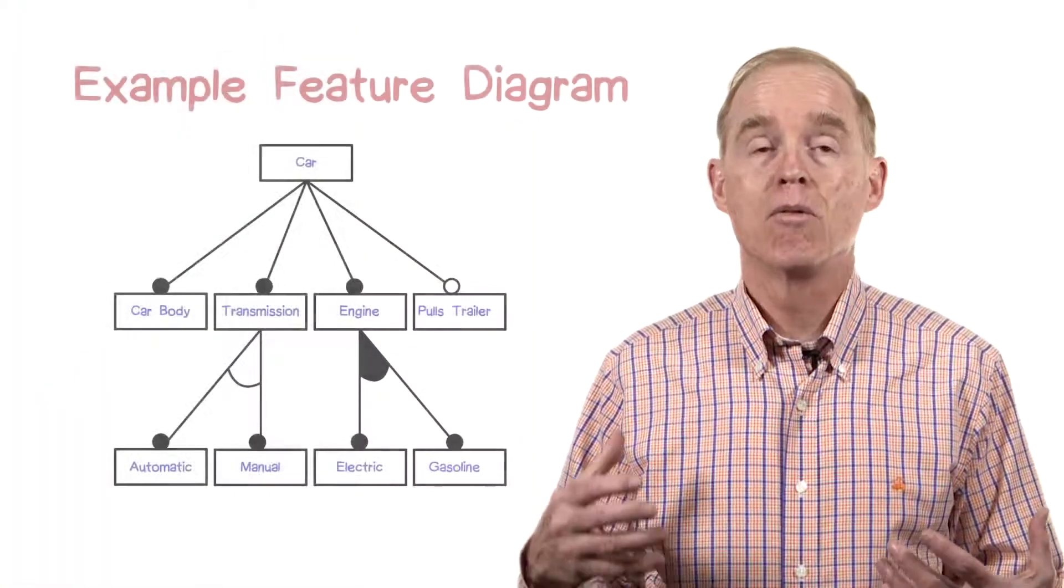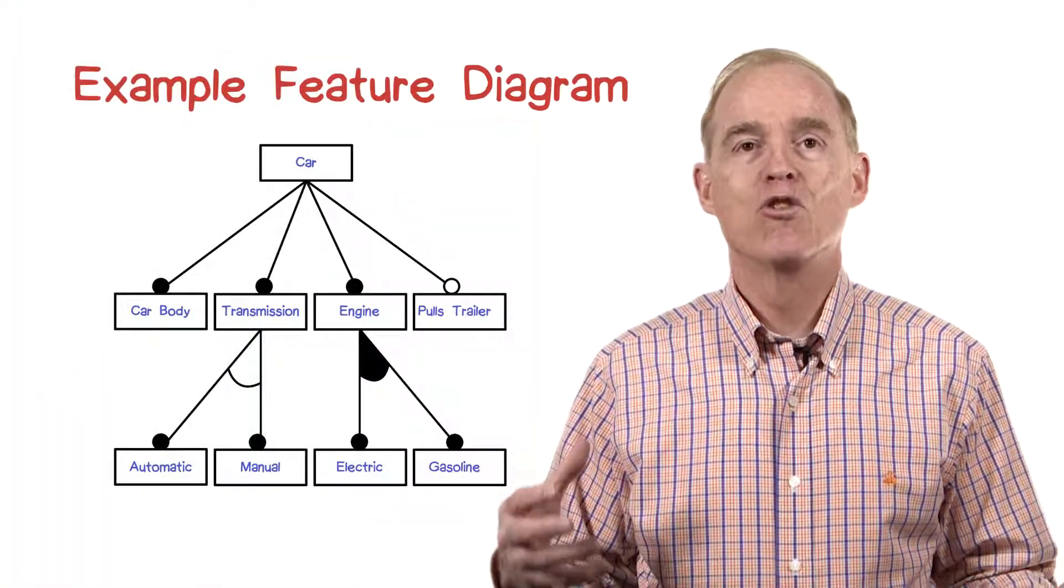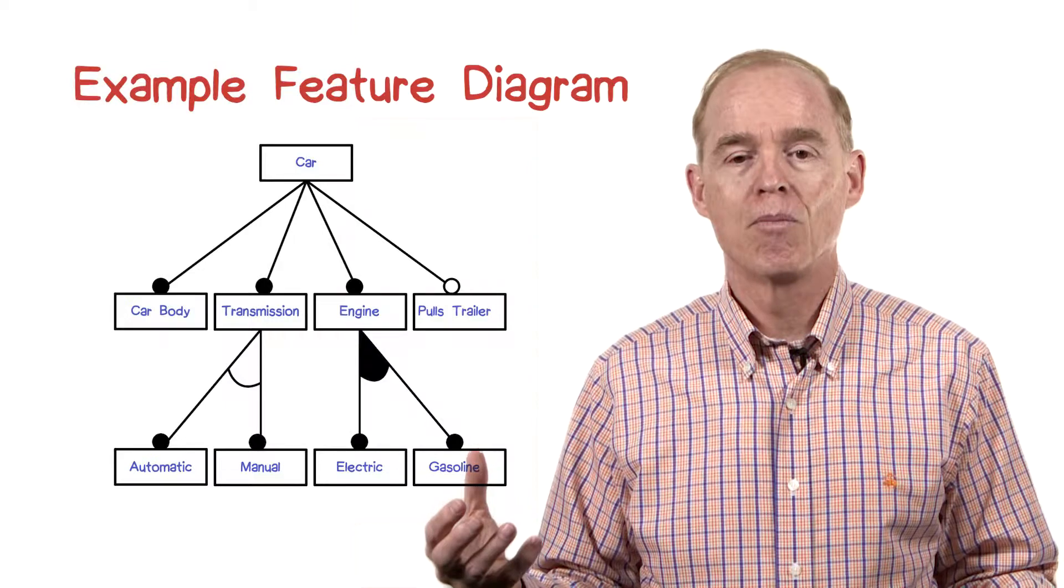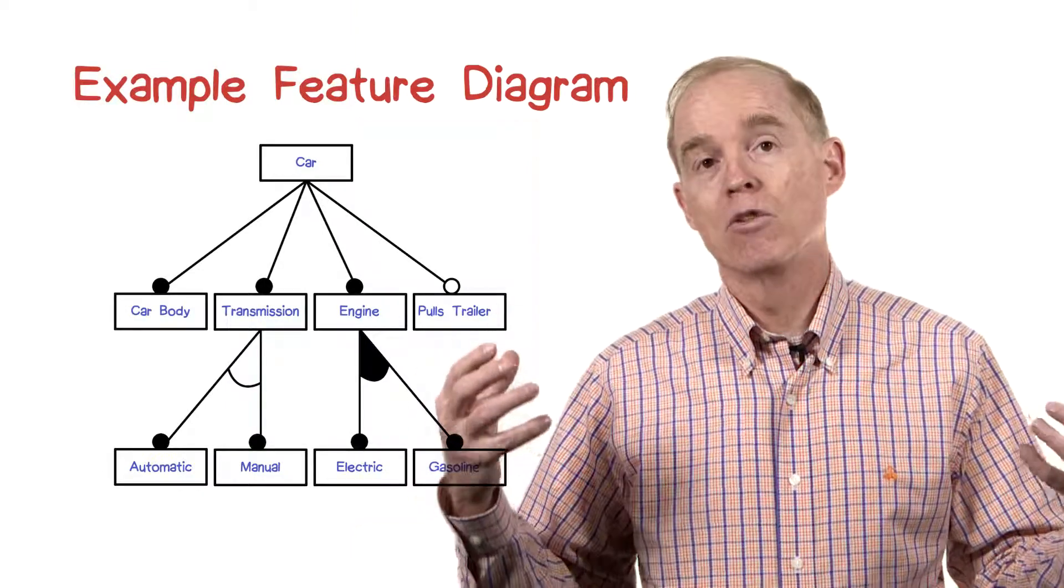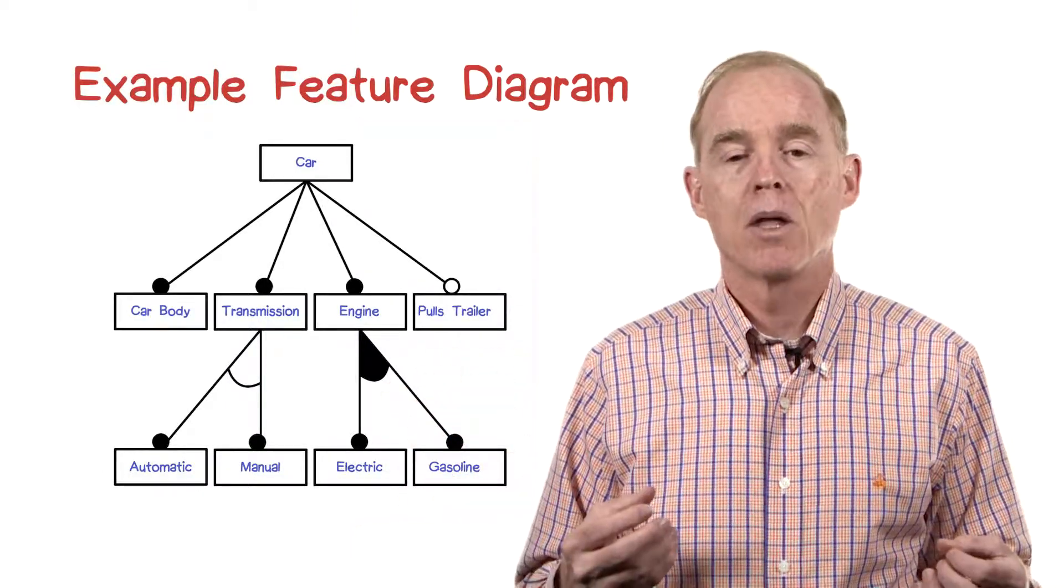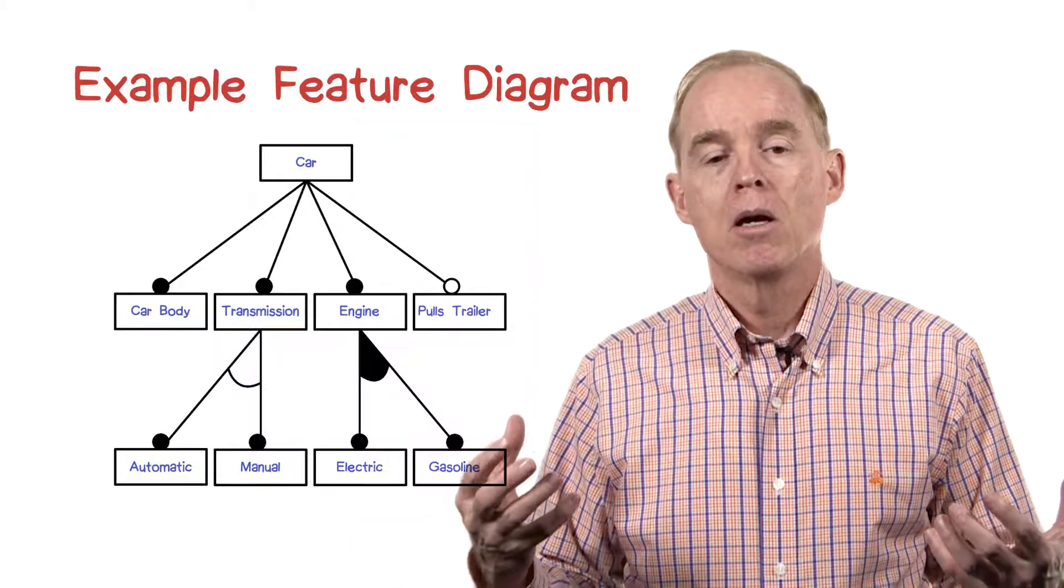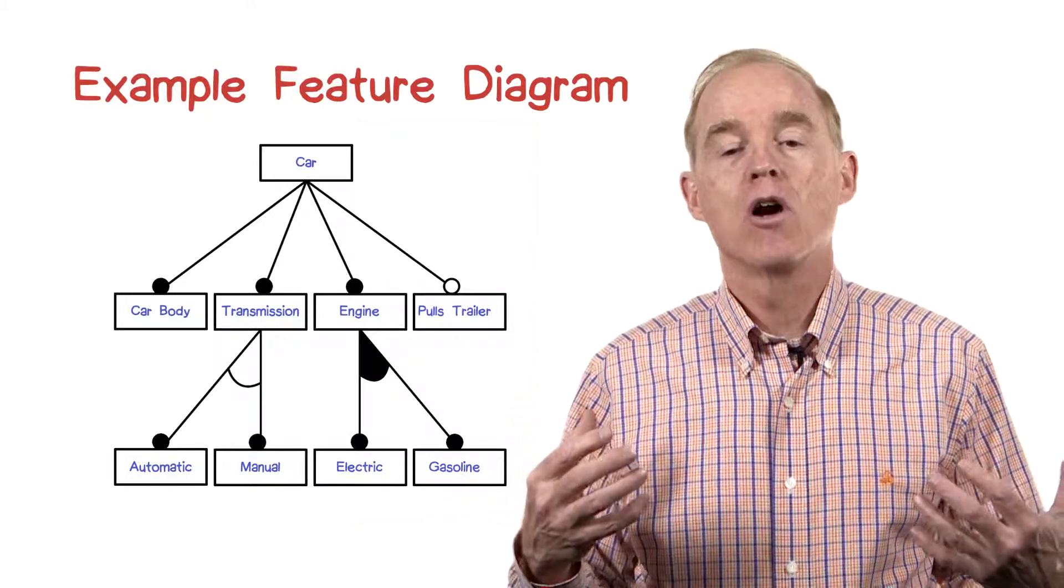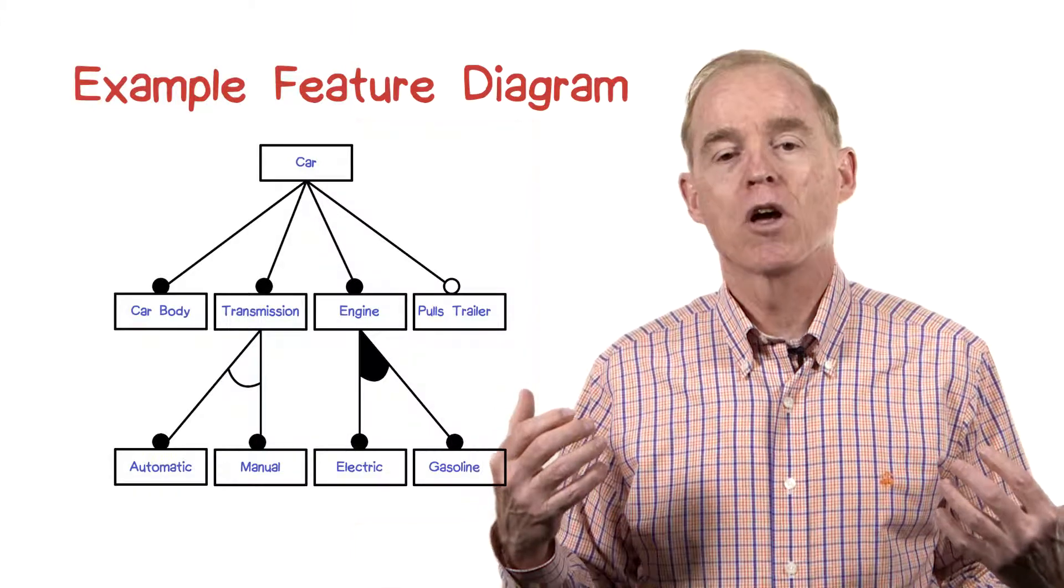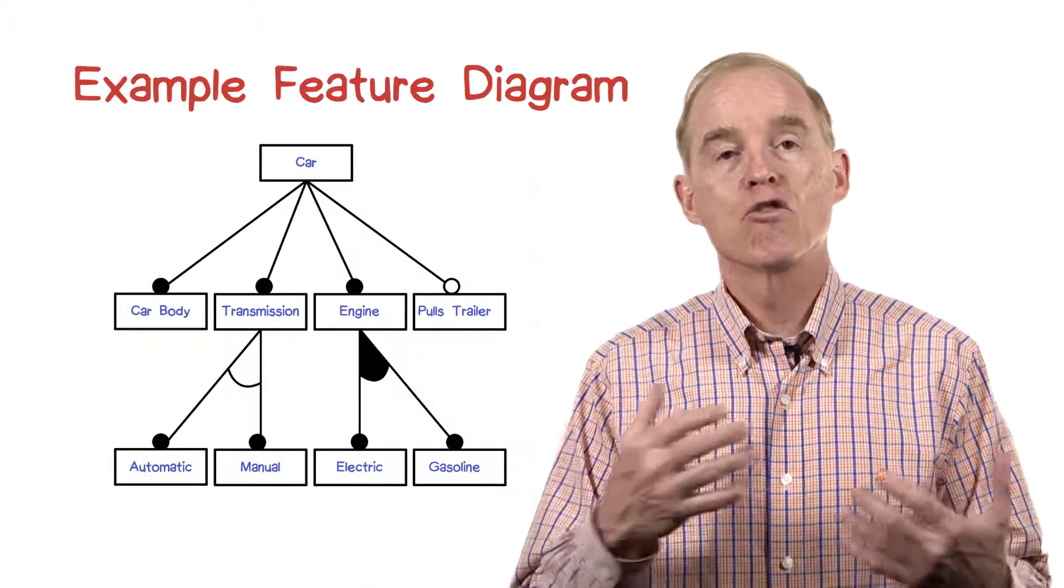Here's a particular feature diagram showing the features of a car. At the top is what's called the concept, or the main manufactured item, and then under it are its features. So the car, this particular car, has four features.